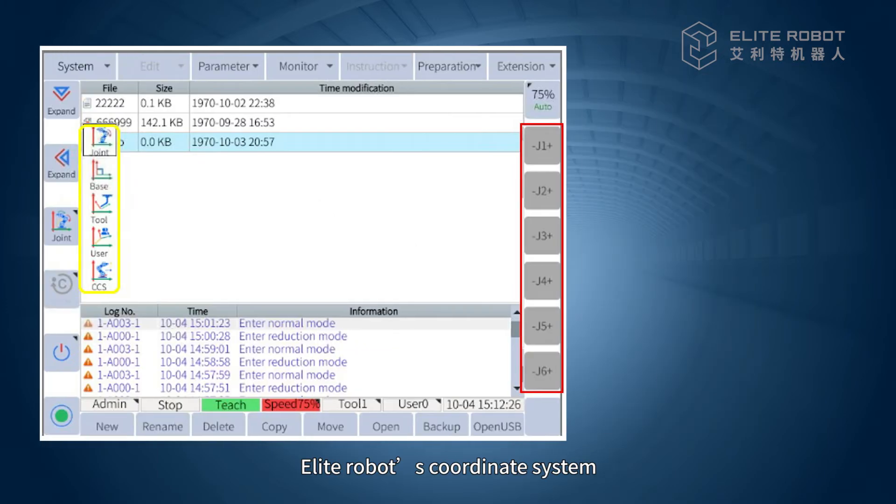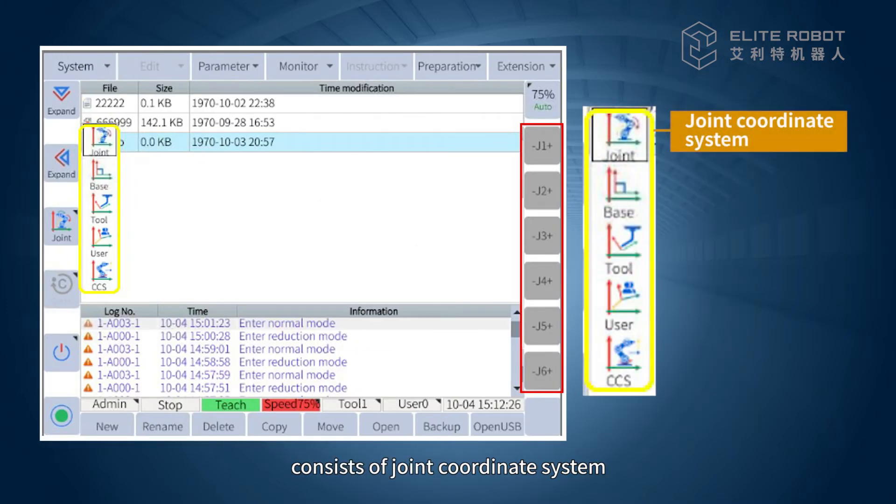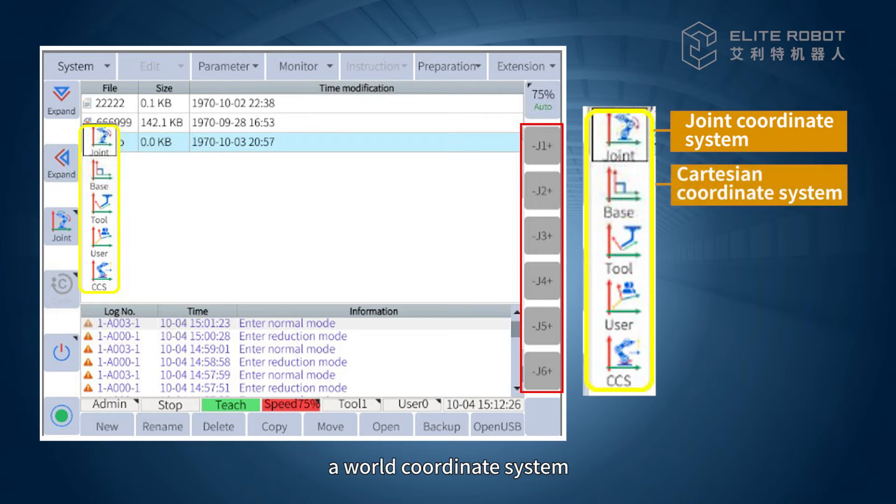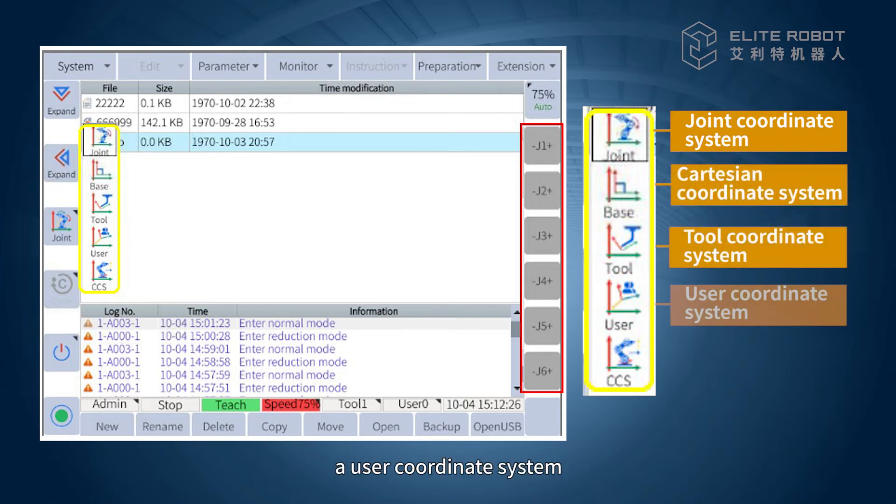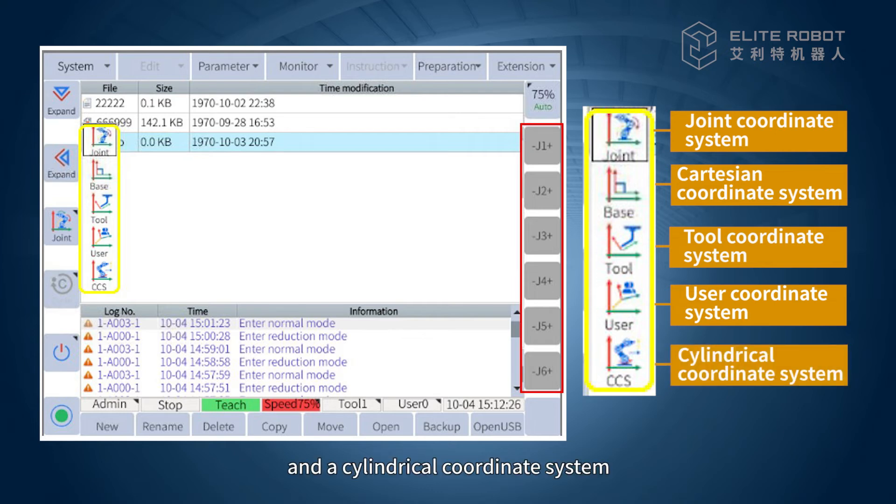Elite Robot's coordinate system consists of a joint coordinate system, a world coordinate system, the tool coordinate system, a user coordinate system, and a cylindrical coordinate system.